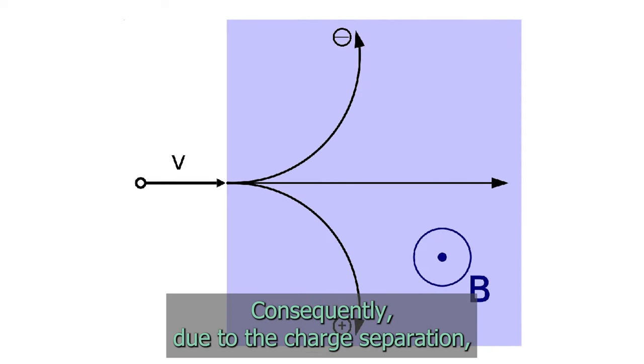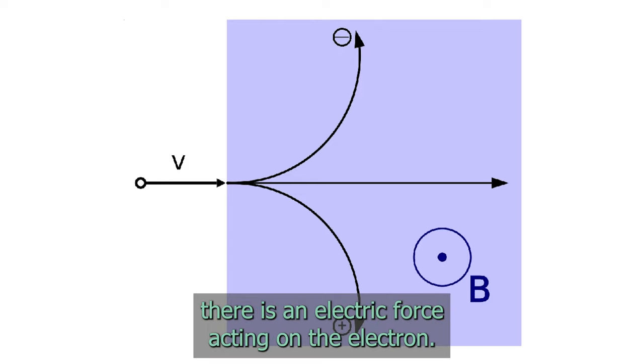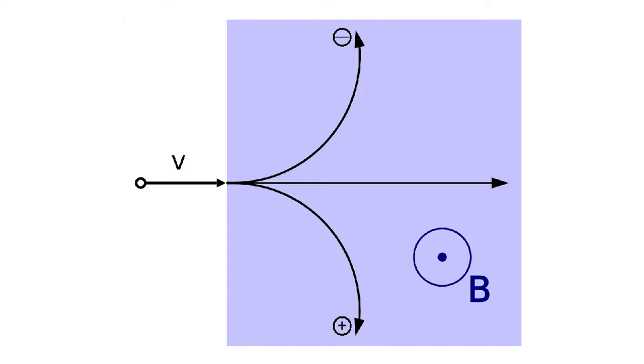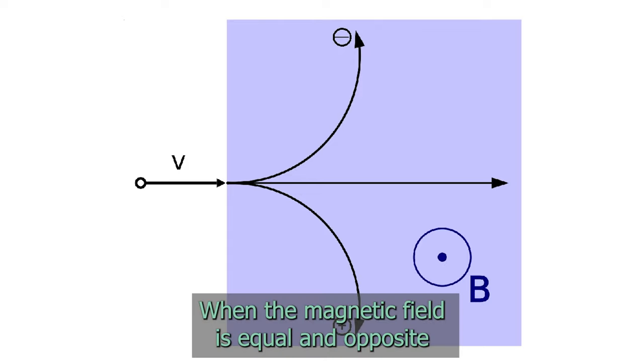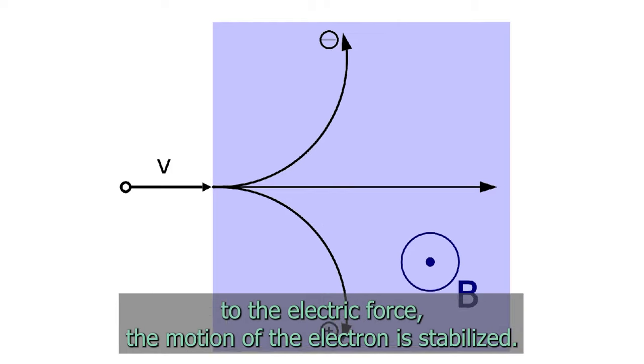Consequently, due to the charge separation, there is an electric force acting on the electron. When the magnetic field is equal and opposite to the electric force, the motion of the electron is stabilized.